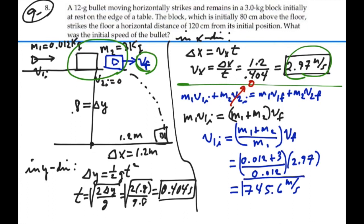So that's how fast the bullet was going when it hit the block: 745.6 meters per second. Answer.